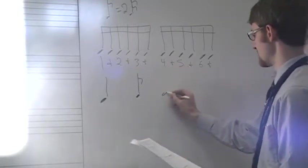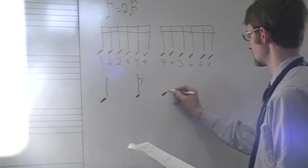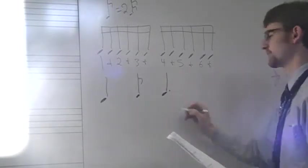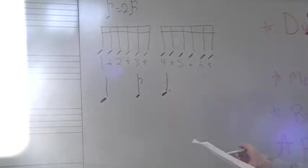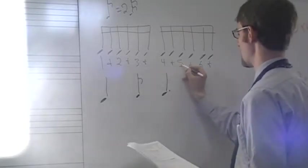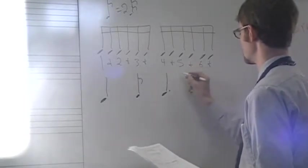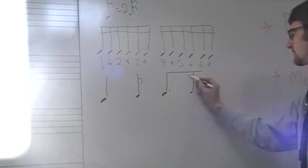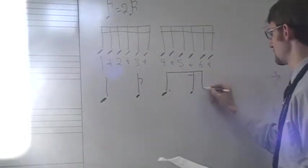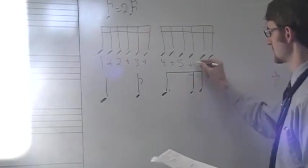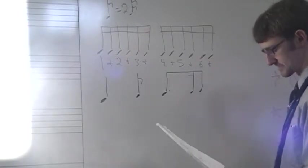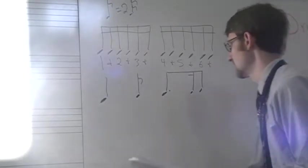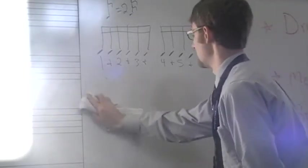Next one is a dotted eighth. Dotted eighth covers up three sixteenths notes. Four and five. So the next one falls on and. And that's how you do the little stem there for the sixteenth note. And then the last one falls on six because this is a sixteenth note. It covers up one sixteenth note. Next one goes on the edge.